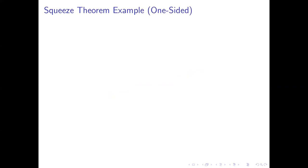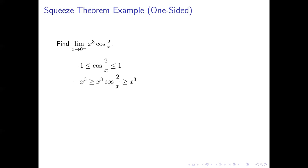Here's a second example, this time involving a one-sided limit. We're going to find the limit as x approaches 0 from the left of x³·cos(2/x). We'll get started similarly to the last example. We know that the cosine function is always between -1 and 1, so the cosine of 2/x is always between -1 and 1. Now let's multiply everything by x³, but here we need to be a little careful.